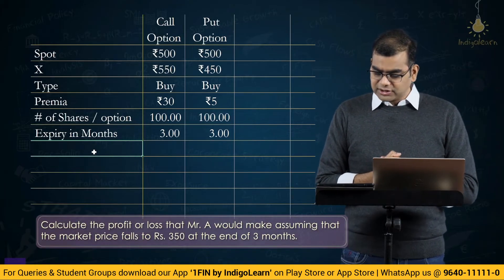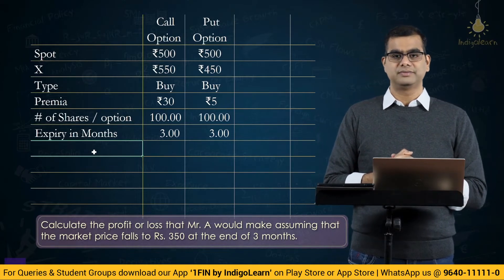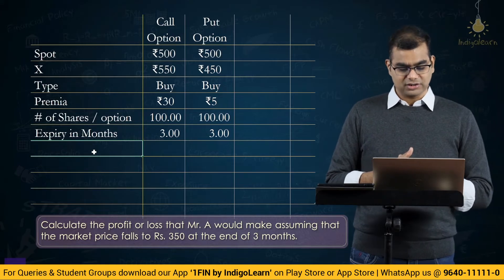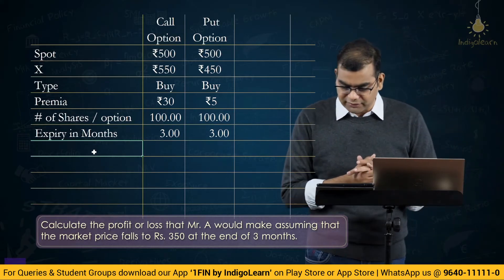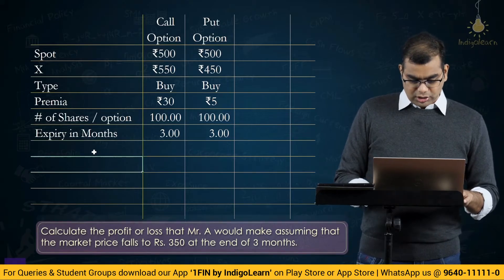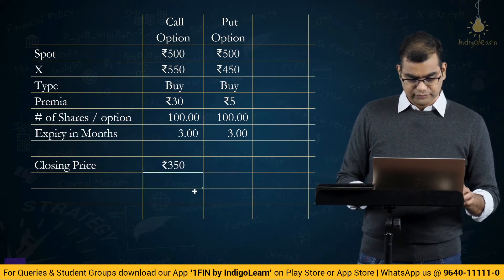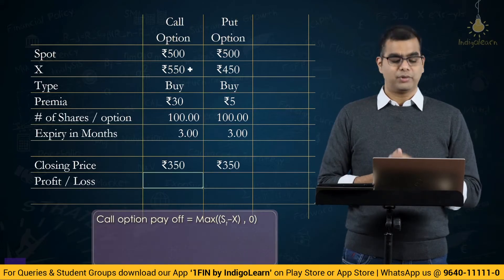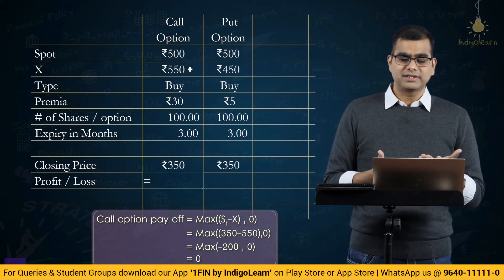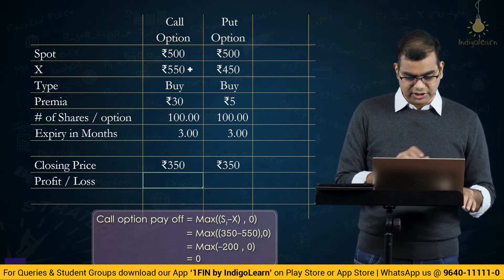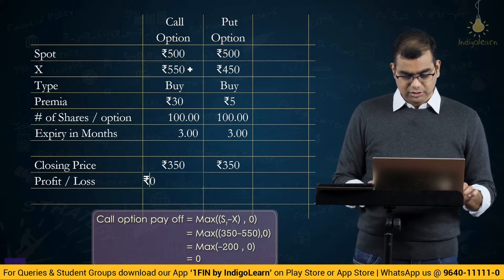Calculate the profit or loss that Mr. A would make, assuming the market price falls to Rs. 350 at the end of 3 months. We need to calculate the profit or loss on both contracts — the call option and the put option. The closing price is Rs. 350. For the call option, you are not going to exercise it because the strike price is 550 and the market is at 350, so the payoff from the call is Rs. 0.